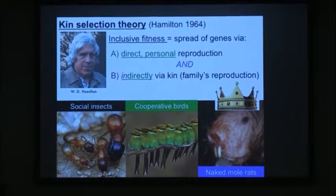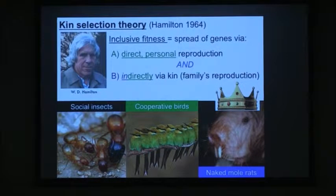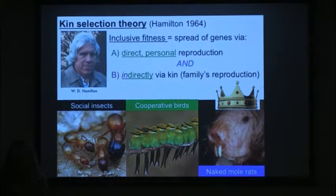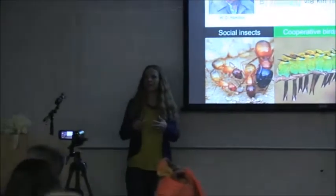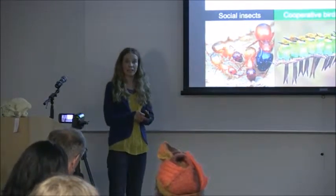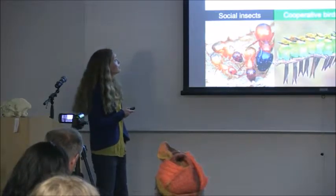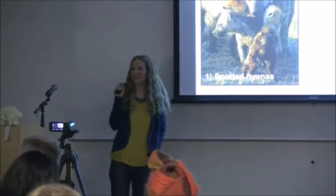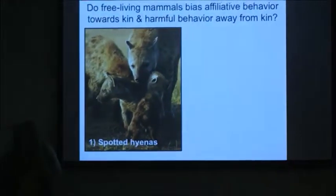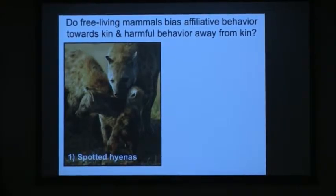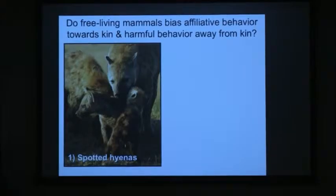In my work, I wanted to think about how kin selection may potentially favor cooperative behavior outside of mating. Is it possible that doing something friendly helps my own genetic benefit through indirect sharing of genes with relatives? I'm going to take you through a couple of different animals where I've been asking this question using long-term datasets: spotted hyenas in Kenya, yellow-bellied marmots in Colorado, and California ground squirrels in the East Bay. Do free-living mammals bias affiliative — that is, friendly — behaviors towards genetic relatives, and do they bias harmful behaviors away from kin?